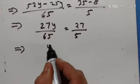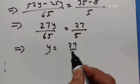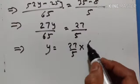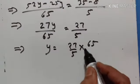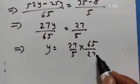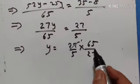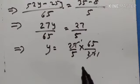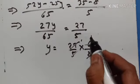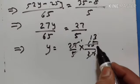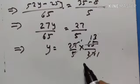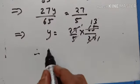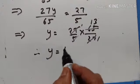Y is equal to 27 upon 5 multiplied by 65 upon 27. The 27s cancel — 27 ones are 27. And 5 into 13 is equal to 65. Therefore y is equal to 13.